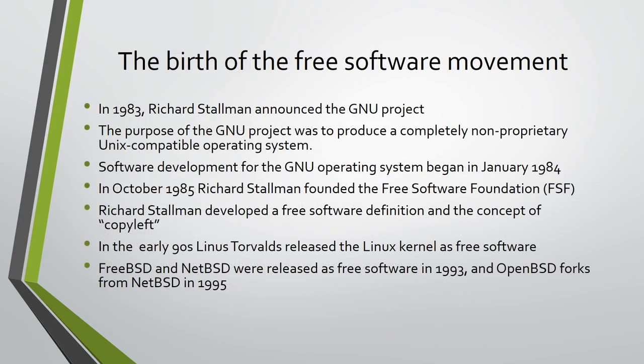In 1983, Richard Stallman, author of the Emacs Editor and member of the hacker community at the MIT Artificial Intelligence Laboratory, announced the GNU project. The purpose of the GNU project was to produce a completely non-proprietary UNIX-compatible operating system. He specifically cited as a motivation his opposition to non-disclosure agreements and restrictive licenses, which prohibited the free sharing of potentially profitable development software, a prohibition directly contrary to the traditional hacker ethic.